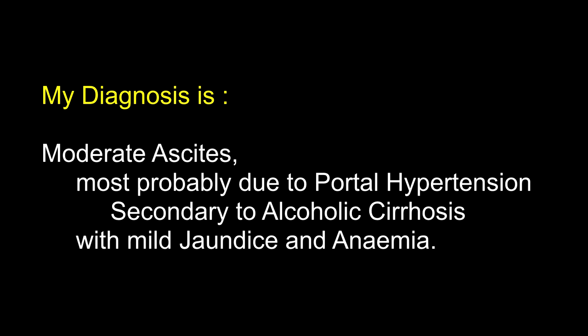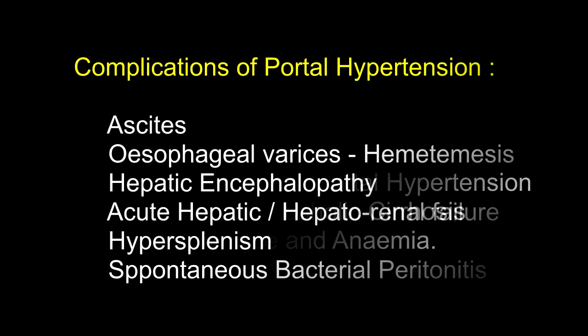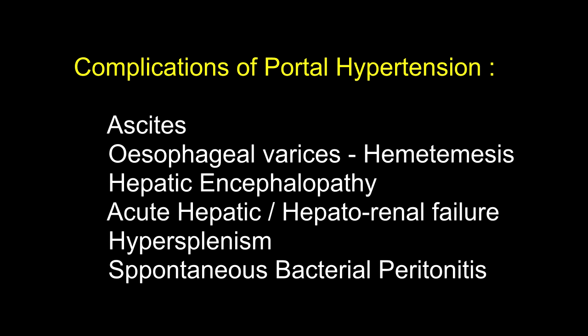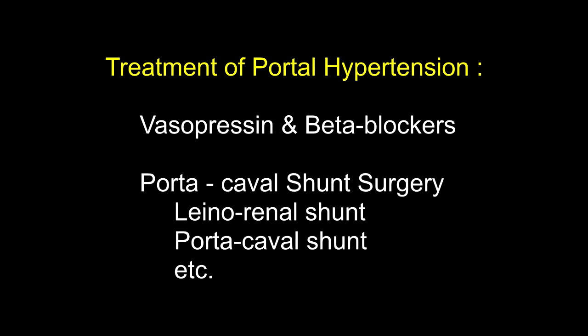What is portal hypertension? Excessive pressure in the portal vein — pressure more than 30 cm of saline — is termed portal hypertension; normally it is 10–15 cm. What are the complications of portal hypertension? Ascites, esophageal varices with hematemesis, hepatic encephalopathy, acute hepatic or hepatorenal failure, hypersplenism, and spontaneous bacterial peritonitis.